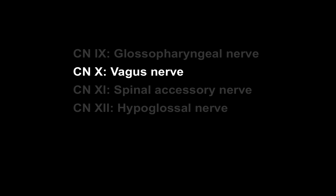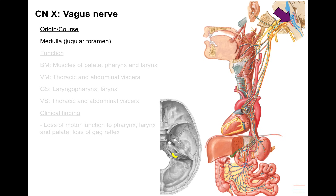Next is the vagus nerve, cranial nerve 10. This one also arises from the medulla oblongata — 9, 10, 11, and 12 are all associated with the medulla oblongata — and courses through the same opening, the jugular foramen, along with 9, 10, and 11. You can see the jugular foramen in the base of the skull in yellow at the bottom of the picture.